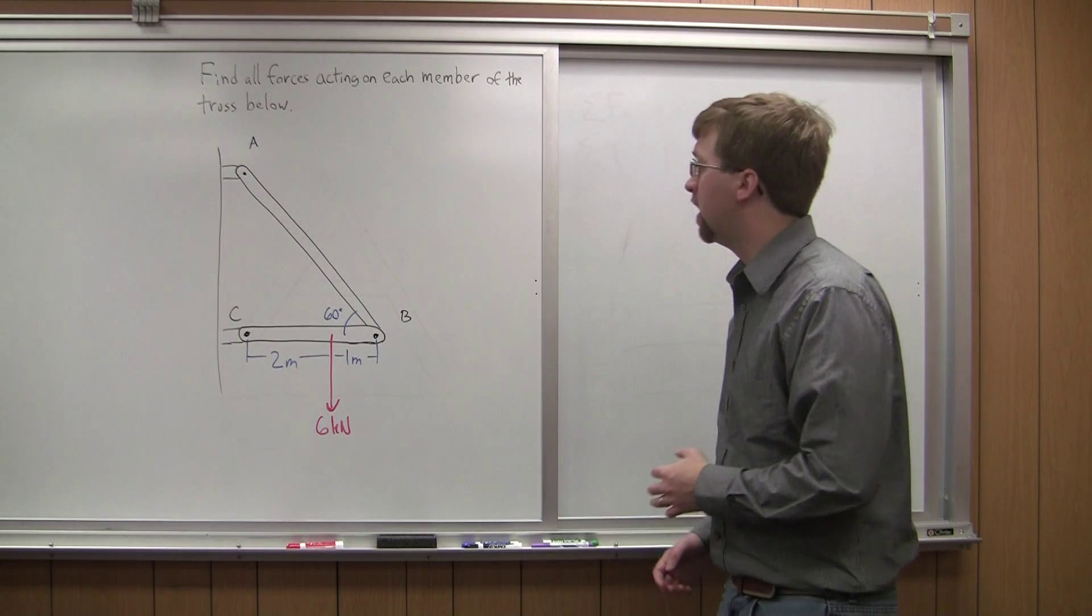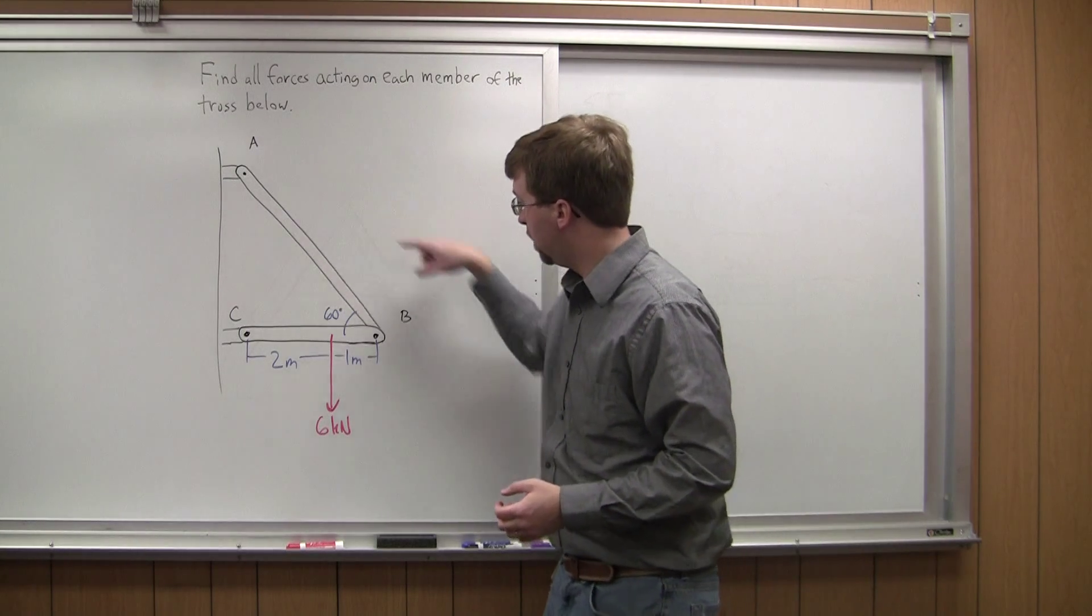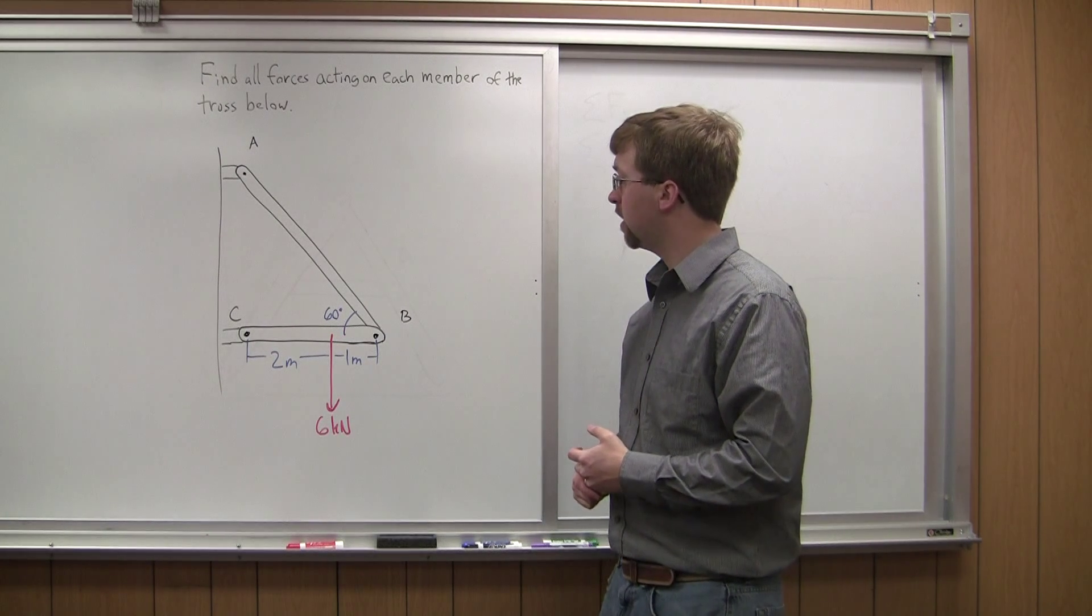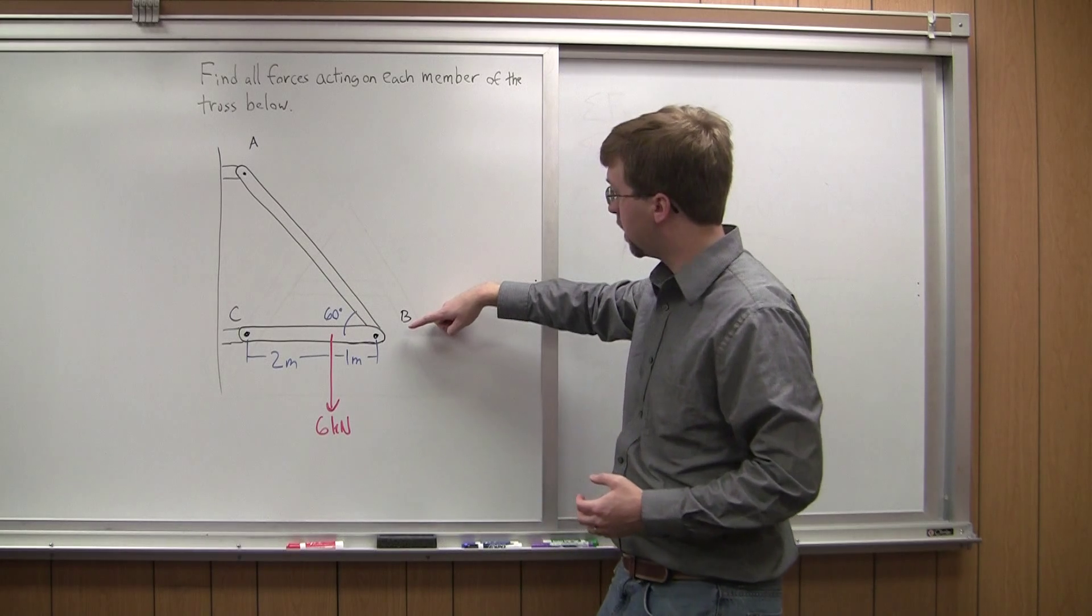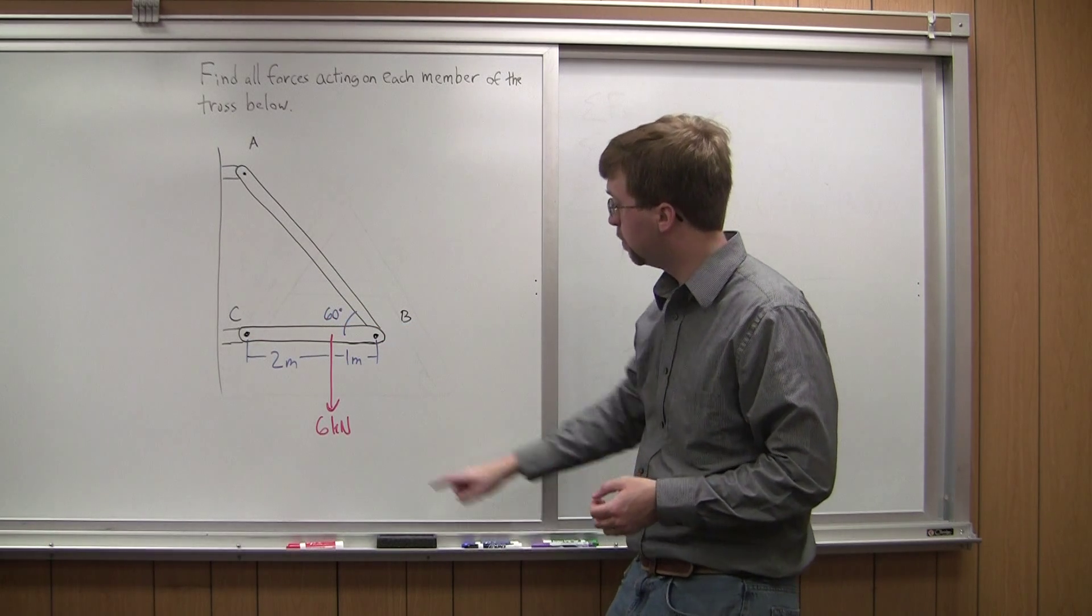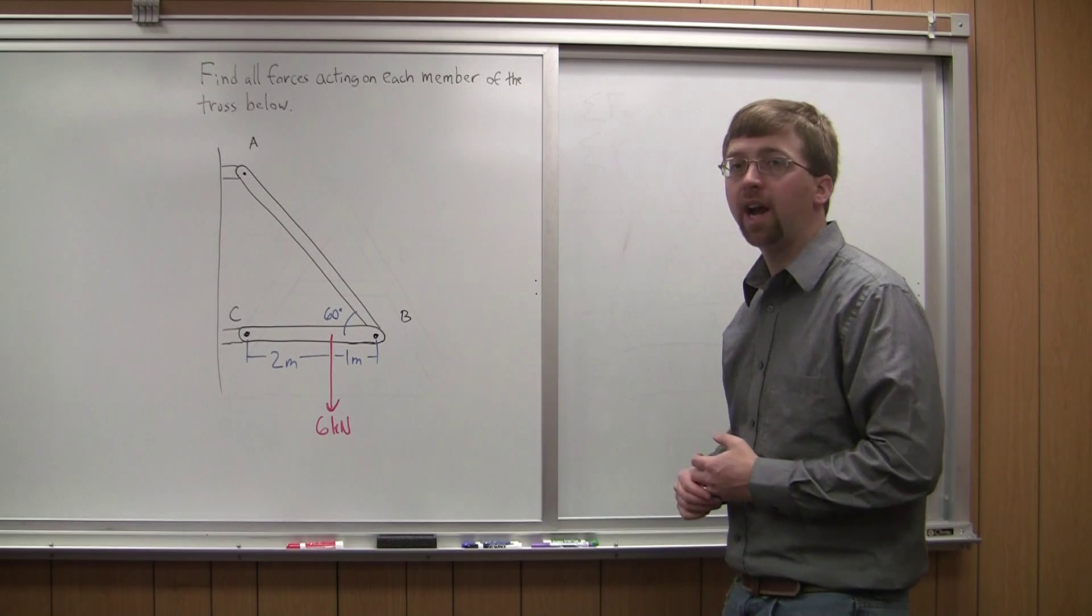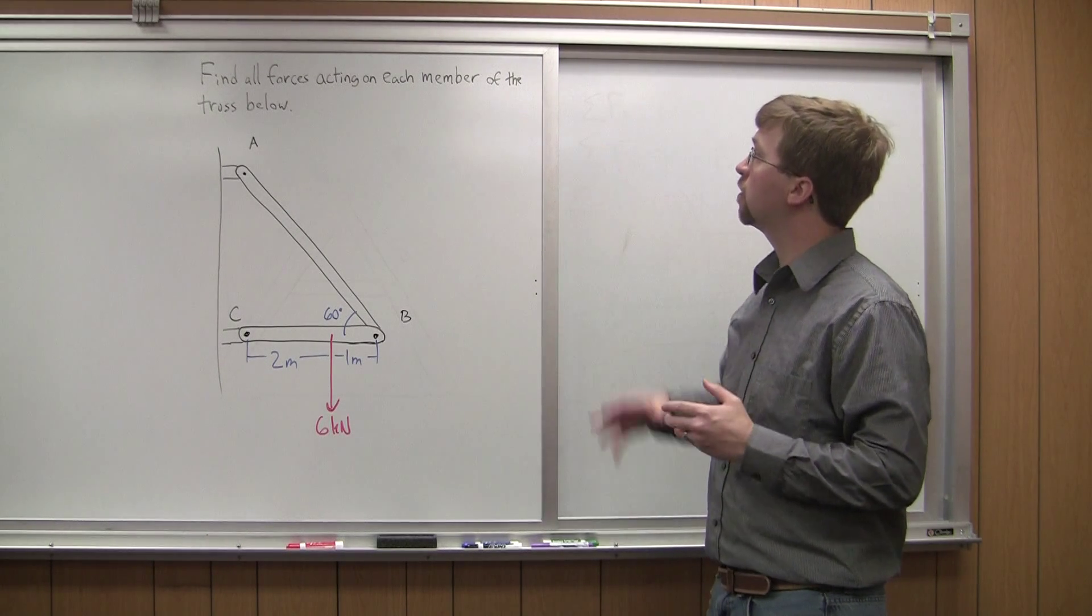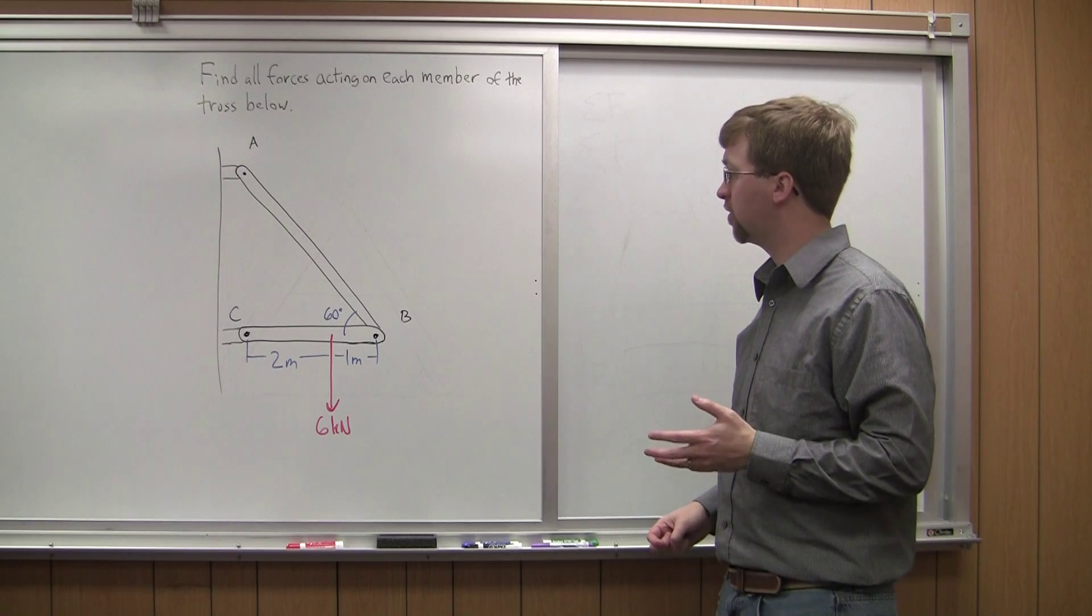Hello. For this problem we have a frame. This is frame ABC over here. It's only got two members in it. So it's got AB which is going down here and then CB which goes across. And we've got a six kilonewton load about two-thirds of the way out on member CB. So we want to find all forces acting on each member of the truss shown below.